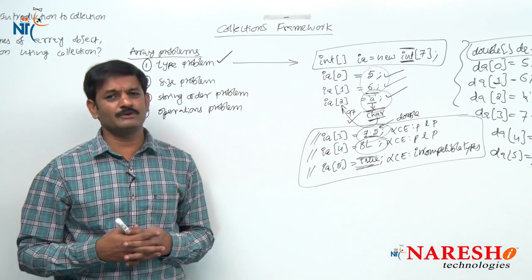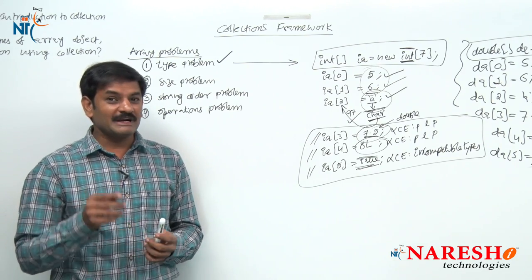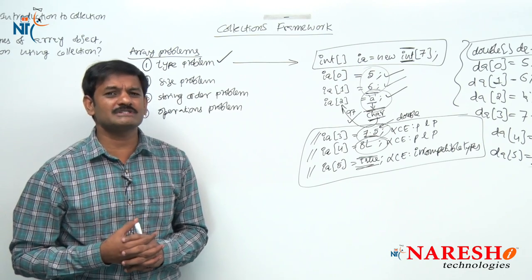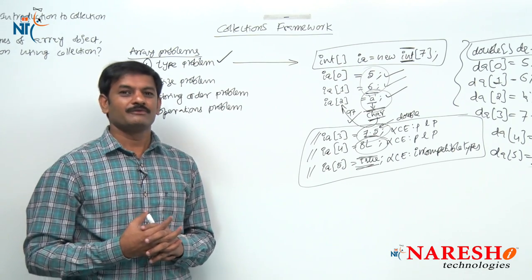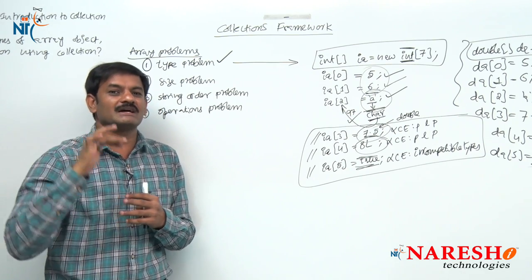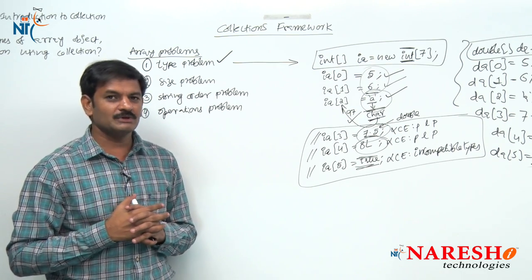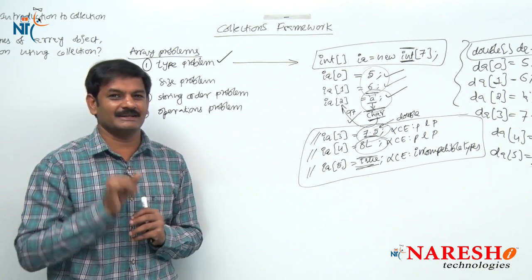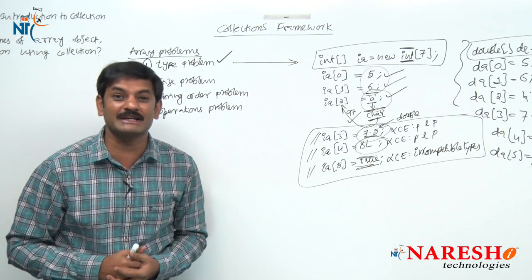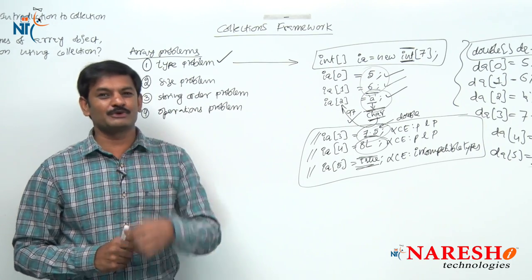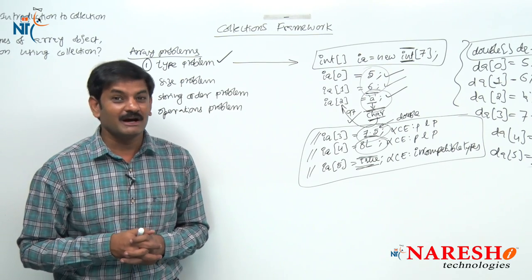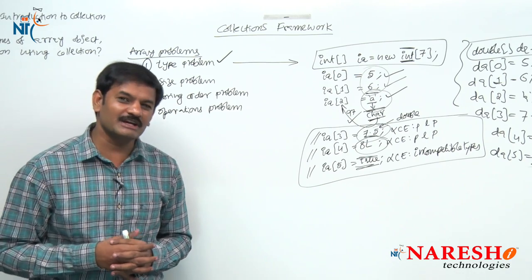This point might be familiar from C language — array has a type problem there too. But in Java, we can solve the array type problem ourselves — no need to depend on any predefined API. Java supports inheritance — parent class, child class, superclass, subclass. Through the inheritance concept, this type problem can be solved without using collection.